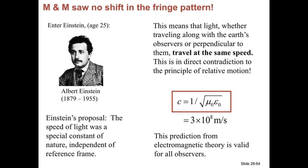Whether you're measuring the speed of a light beam from your bike, your car, or standing still on the road, everyone will measure the same speed. It makes no intuitive sense, but Einstein's proposal is that even if it makes no intuitive sense, we should follow the mathematics. This leads to some really unintuitive results about how space and time and physics work, and I'm going to try to explain a few of those today.